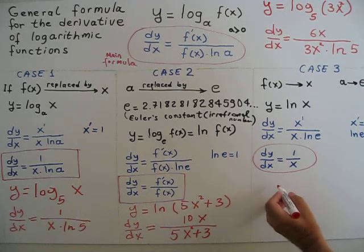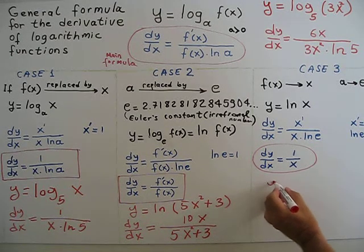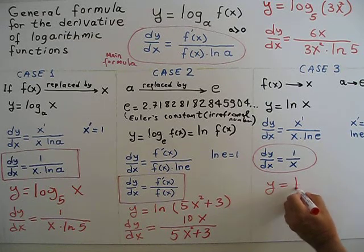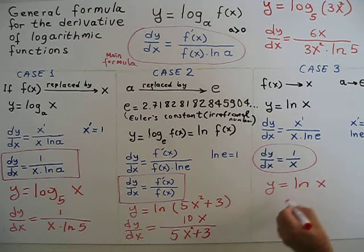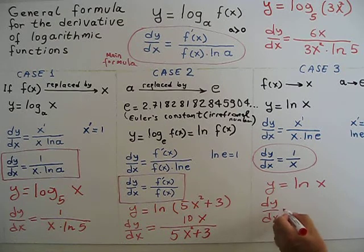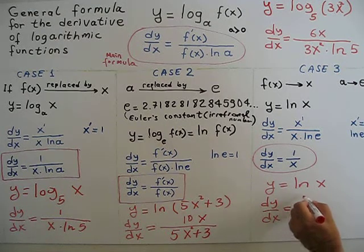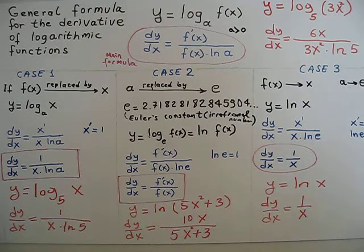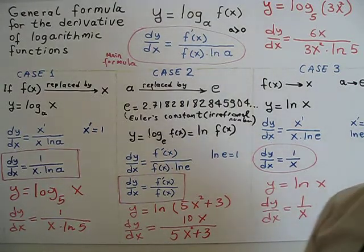This is very easy. For case 3, y equals ln of x, so dy over dx will be 1 over x.